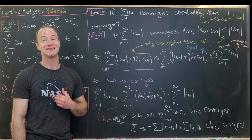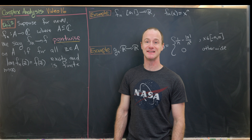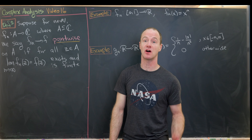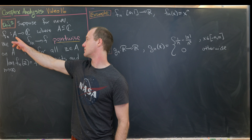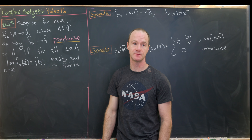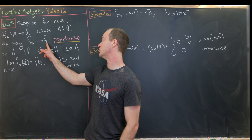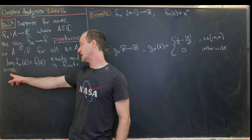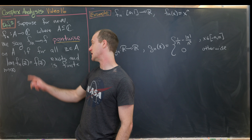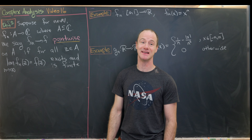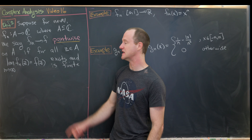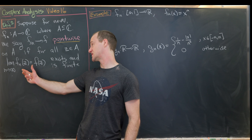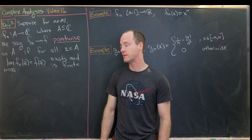Now we're ready to look at sequences and series of functions. Suppose for natural numbers n we have functions f_n from a subset A of the complex numbers to the complex numbers. We say that f_n converges to f pointwise on A if for all z in A, the limit as n goes to infinity of f_n(z) converges to f(z), where the limit exists and is finite. Notice we fix z first, then take the limit.